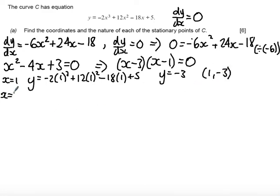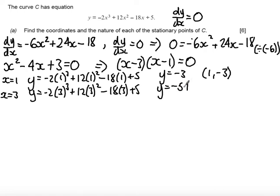Next, substituting in x equals 3. So I get minus 2 lots of 3 cubed plus 12 lots of 3 squared minus 18 lots of 3 plus 5. So we get y equals minus 2 times 27 is minus 54, 12 times 9 is plus 108, minus 18 times 3 is minus 54. Now notice that the minus 54 and minus 54 will cancel out the 108. So all that's going to be left is that plus 5. So we get the coordinate 3, 5.